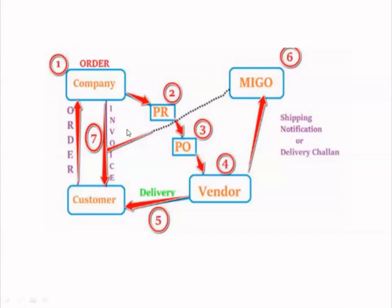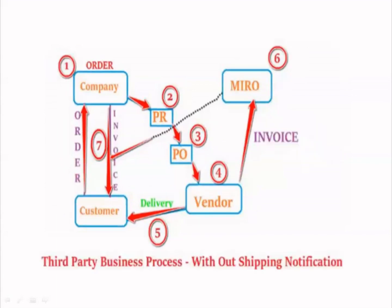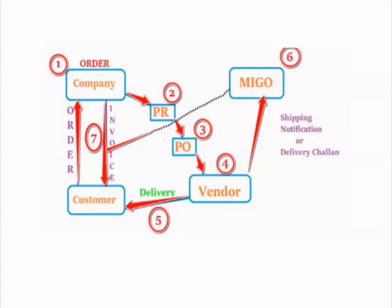Do you understand the difference between them? It is just a small difference. In without shipping notification, we use a vendor invoice. In with shipping notification, we use the MIGO transaction. That is the only simple difference.